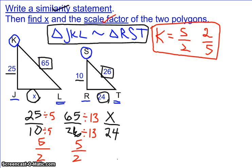All I have left now is to figure out what x is. Well, I know my one side length pair changes by 5 over 2. I know my second side length pair changes by 5 over 2.